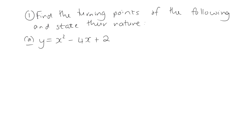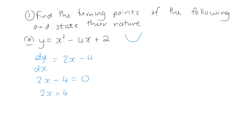Example one: find the turning points of the following and state their nature. Part a: y equals x squared minus 4x plus 2. You need some common sense here as well — you know what a quadratic graph looks like. So you've got this kind of shape for a positive quadratic, and you're expecting to get a minimum turning point, and just one turning point for a quadratic graph. So for turning points, dy by dx is needed. Differentiate and we get 2x minus 4.